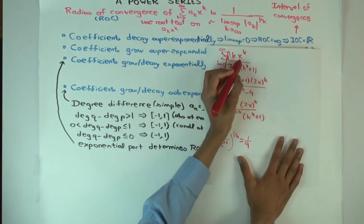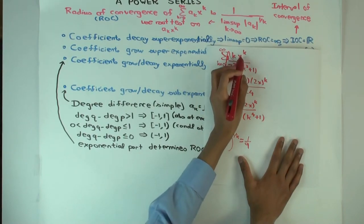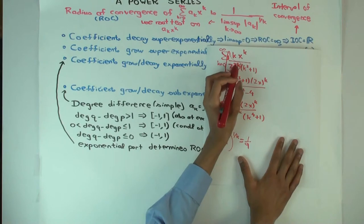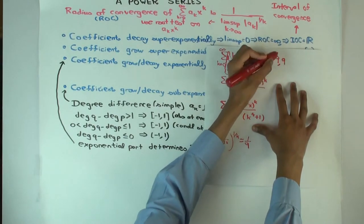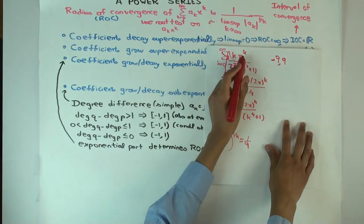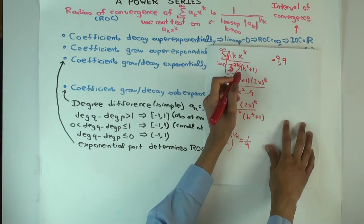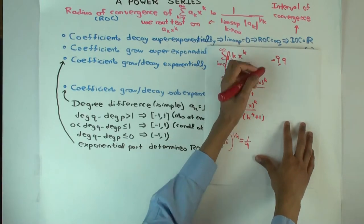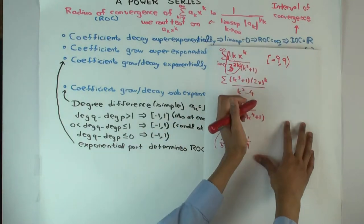You can see this directly: if you put x = 9, then the 9^k and 3^(2k) cancel. If x is bigger than 9, the numerator grows faster than the denominator. If |x| < 9, it converges. At the endpoints ±9, those cancel the exponential part, and you just have the polynomial part — whose convergence you determine using degree differences. The degree difference is 1, so you get: closed on the left and open on the right. The radius of convergence is 9, not 1.